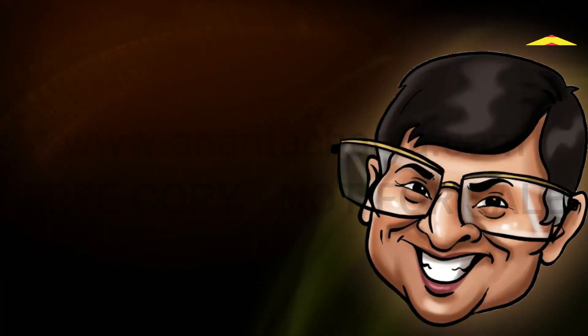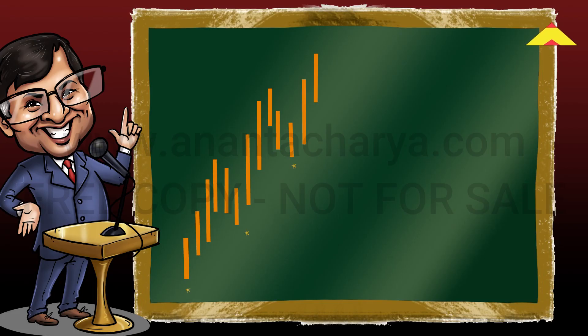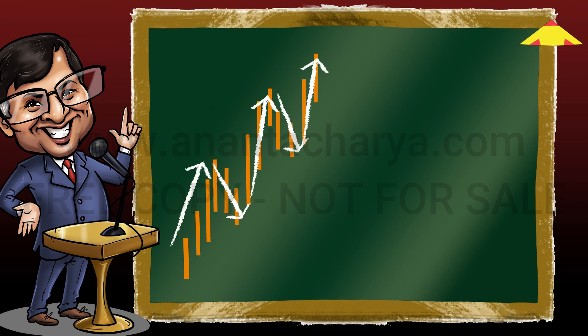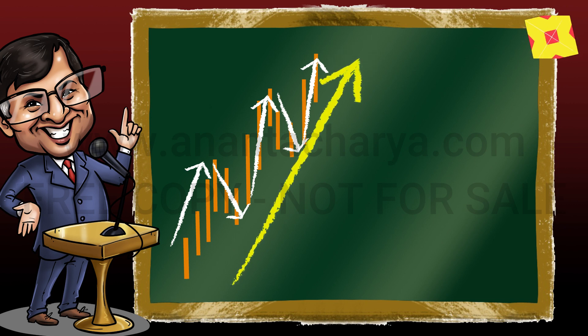In the earlier video, we saw that simple trends combine to form swing trends. A few simple uptrends alternate with a few simple downtrends to form a swing trend.